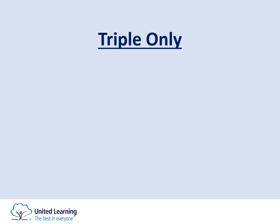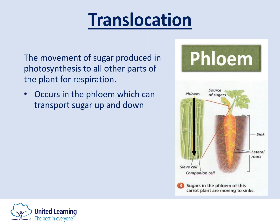This concludes the combined content. Now moving into triple-only content: translocation. Transpiration is a combined topic, but translocation and the role of the phloem is triple-specific. Translocation is the movement of sugars and minerals produced in photosynthesis to all other parts of the plant for respiration. Every single cell within the plant needs sugar in order to respirate.